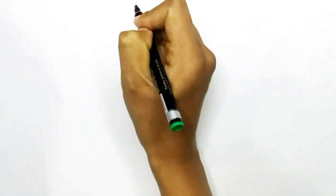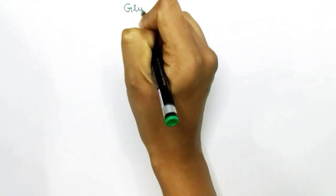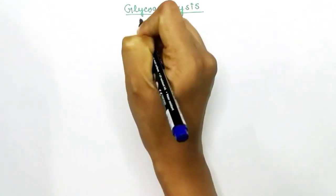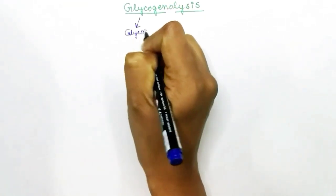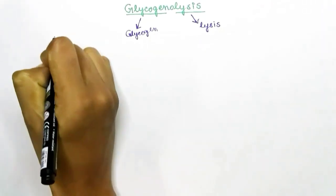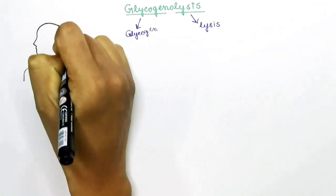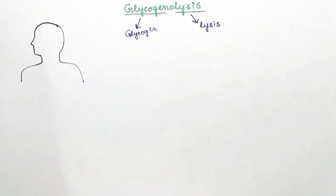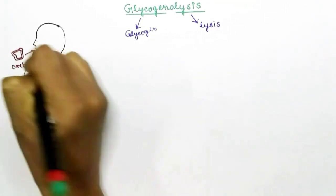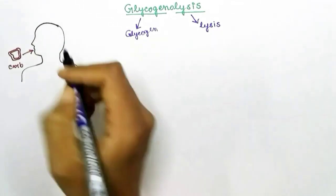In this video we are going to talk about glycogenolysis. If we break the word glycogenolysis, we get glycogen plus lysis — that means lysis of glycogen. So what is glycogen?